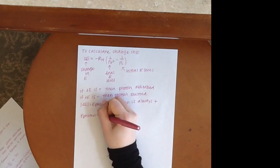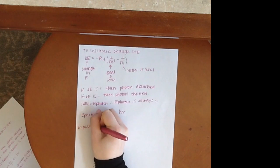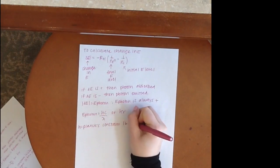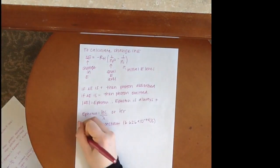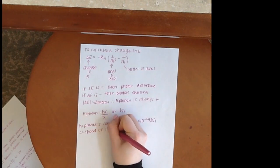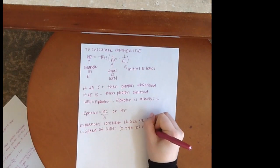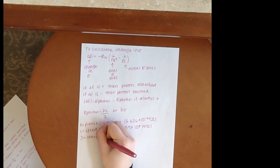E photon can be calculated using the equation E equals h times c divided by lambda, or E is equal to h times v. Where h is Planck's constant, c is the speed of light, lambda is the wavelength, and v is the frequency.